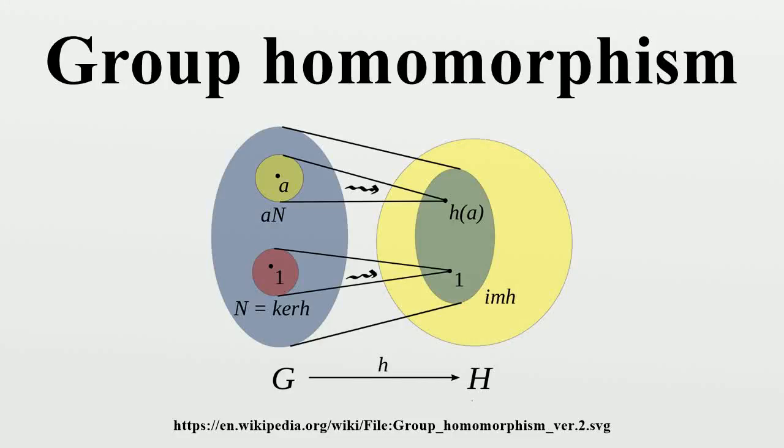In mathematics, given two groups, a group homomorphism from G to H is a function h: G → H such that for all u and v in G it holds that...